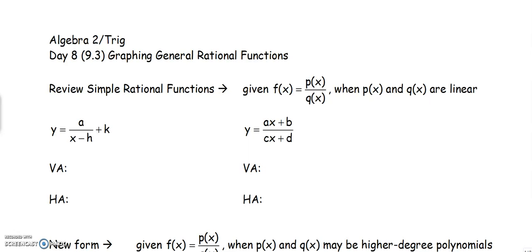Hello, today we are in 9.3. We're going to be graphing general rational functions. We're going to start by reviewing our simple rational functions that we have talked about before. So we're given our f of x, where our p of x and our q of x are both linear equations, which means both of them are going to be to the first power.